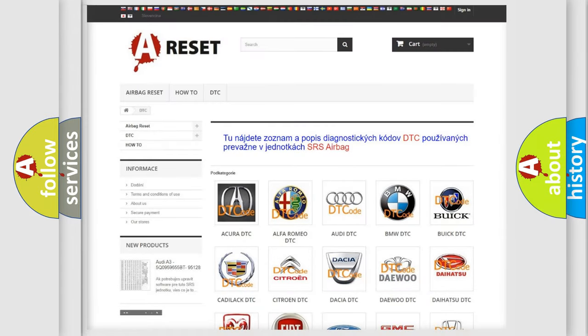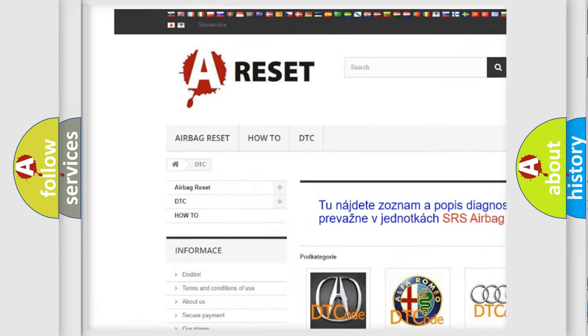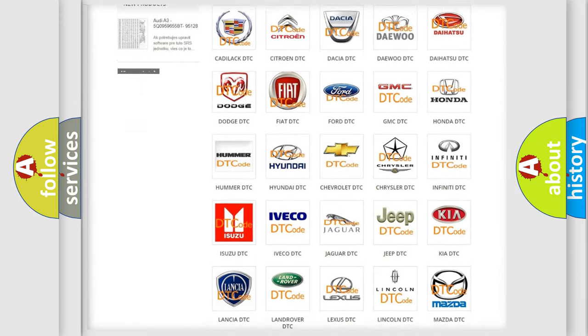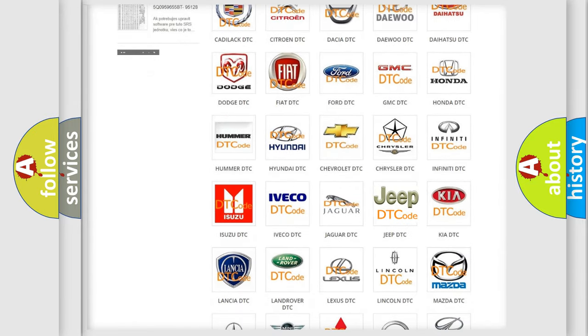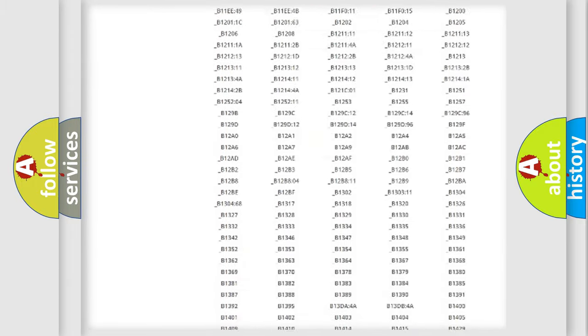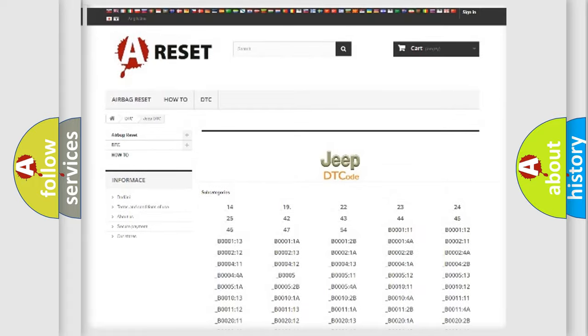Our website airbagreset.sk produces useful videos for you. You do not have to go through the OBD2 protocol anymore to know how to troubleshoot any car breakdown. You will find all the diagnostic codes that can be diagnosed in Jeep vehicles.